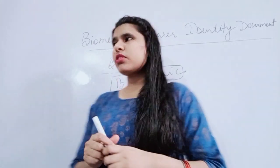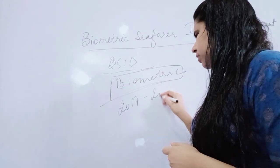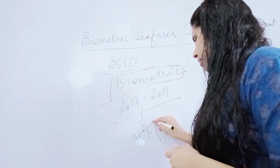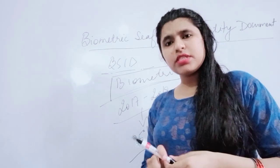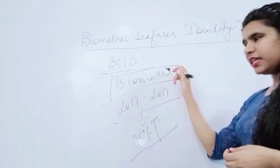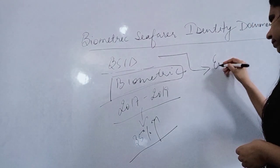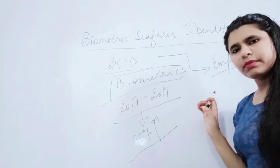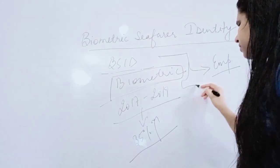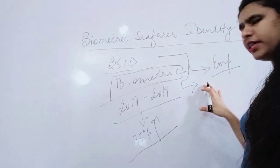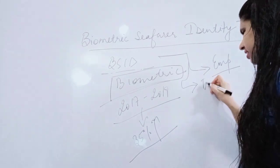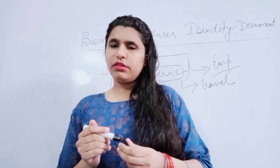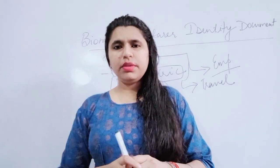By using BSID records, the government observed that the number of employment increased approximately 35% from 2017 to 2019. BSID is purposely used for employment generation, so the government has data on who is employed and who is not. The government also gives seafarers identification so they can travel anywhere in the world.